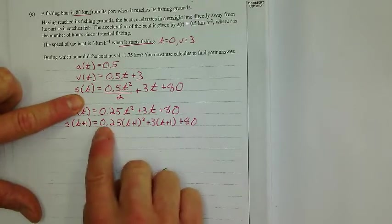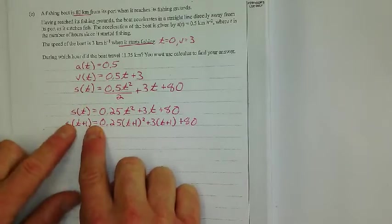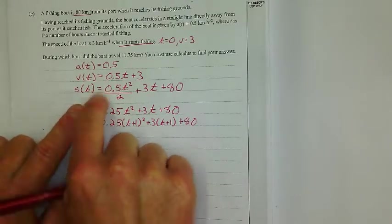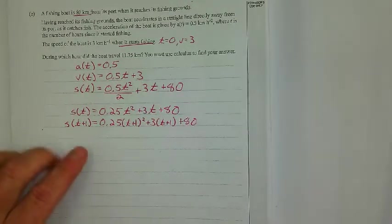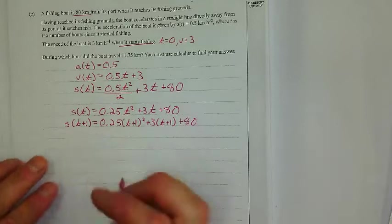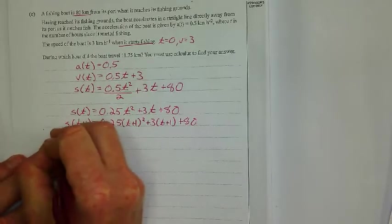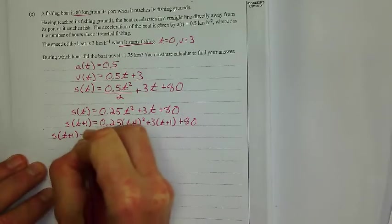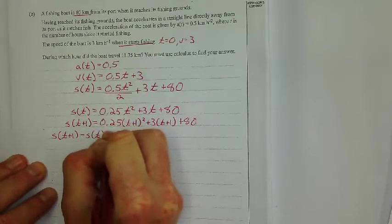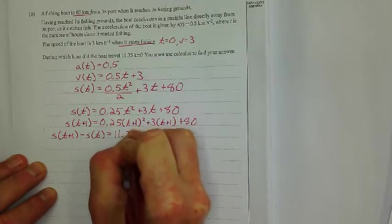okay, I'm going to clean this up. But between these two, when I take this and subtract this, I should get the distance of 11.75. So here's what I'm saying. I'm saying this minus this should give me 11.75.